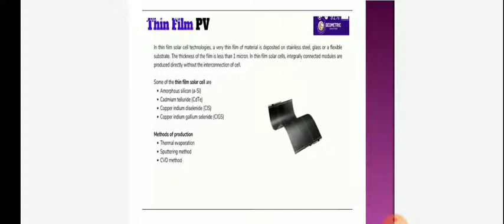Some of the thin film solar cells are amorphous silicon (ASI), cadmium telluride (CDTE), copper indium diselenide, indium diselenide (CIS), and copper indium gallium selenide.